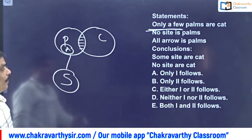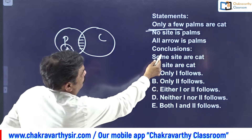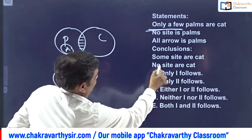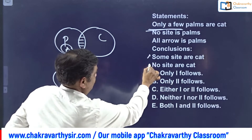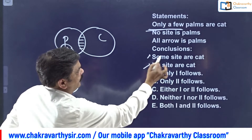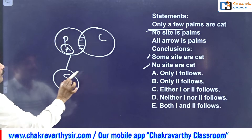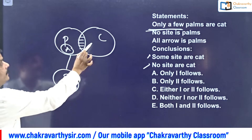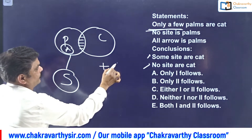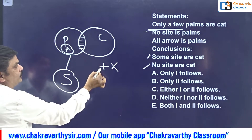Now go for the conclusions quickly. First conclusion: Some sites are cats. Site and cat - positive, wrong. Second conclusion: No site is cat. Site is here, cat is here. 'No' means negative conclusion. From the basic diagram, no site is cat is absolutely right.